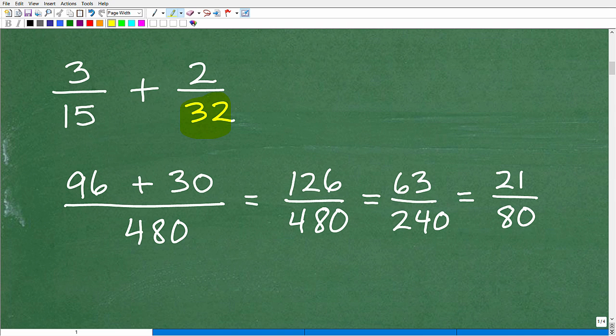So we have 3 fifteenths plus 2 thirty-seconds. I'm not going to find an LCD. I'm simply going to just do my little bowtie method. So I'm going to go 32 times 3. Now I have to do some basic multiplication, but that's not too bad. I'm not trying to figure out the LCD. So 32 times 3, that's 96. 15 times 2, that's 30. So this is an addition problem, so this form is my numerator. And now I just go 15 times 32. This is my denominator. That's 480. I do have to do some basic multiplication. But again, I'm not trying to figure something out. I'm just doing some quick basic multiplication and addition here. So now 96 plus 30, that's 126 over 480, I am done.